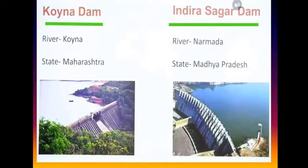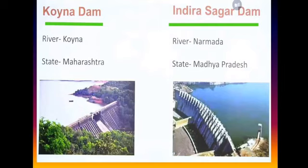In this slide, two different dams are shown. First is Koyna Dam, situated on the Koyna River in Maharashtra. The other is Indira Sagar Dam, situated on the Narmada River in Madhya Pradesh. It is very important to remember which dam belongs to which state, which dam is constructed on which river, and any special features of that particular dam.